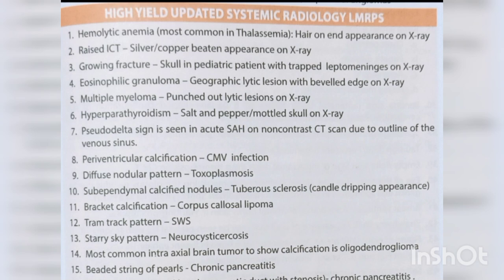Multiple myeloma — punched out lytic lesion on X-ray. Hyperparathyroidism — salt and pepper or mottled skull on X-ray. Pseudo delta sign is seen in acute SAH on non-contrast CT scan due to outline of venous sinus. Periventricular calcification — CMV infection.